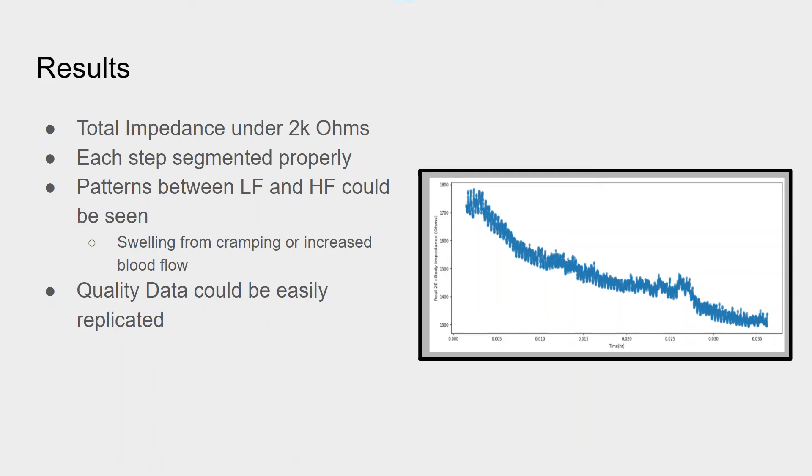Additionally, we have an accelerometer in the device, and as the subject moves, each step can be segmented to provide data on both loaded and unloaded tissue. From this, we've managed to find patterns in both the low frequency and high frequency data that indicates different amounts of blood flow or swelling in all the subjects that we were testing, who all had different fitness levels.